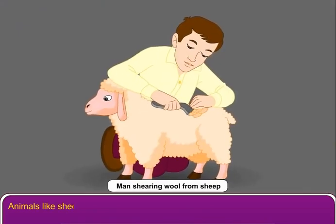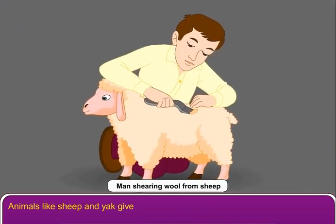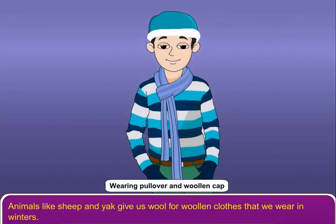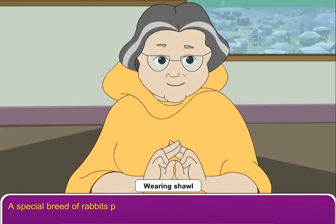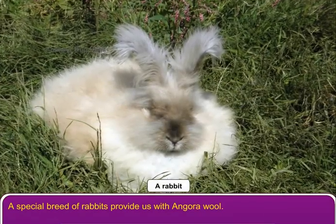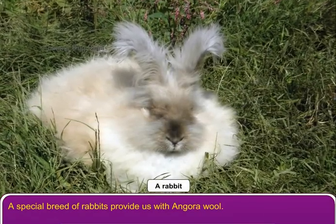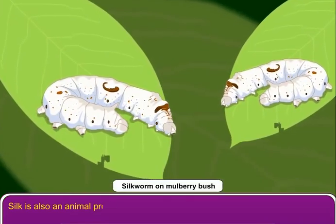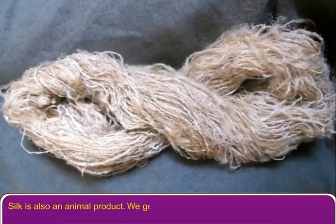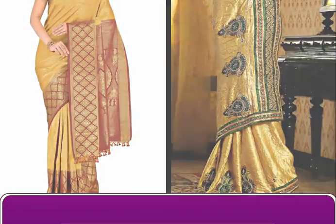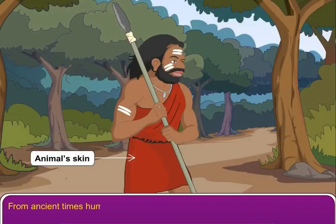Animals like sheep and yak give us wool for woollen clothes that we wear in winters. A special breed of rabbits provides us with angora wool. Silk is also an animal product. We get silk from the cocoon of the silk worm.